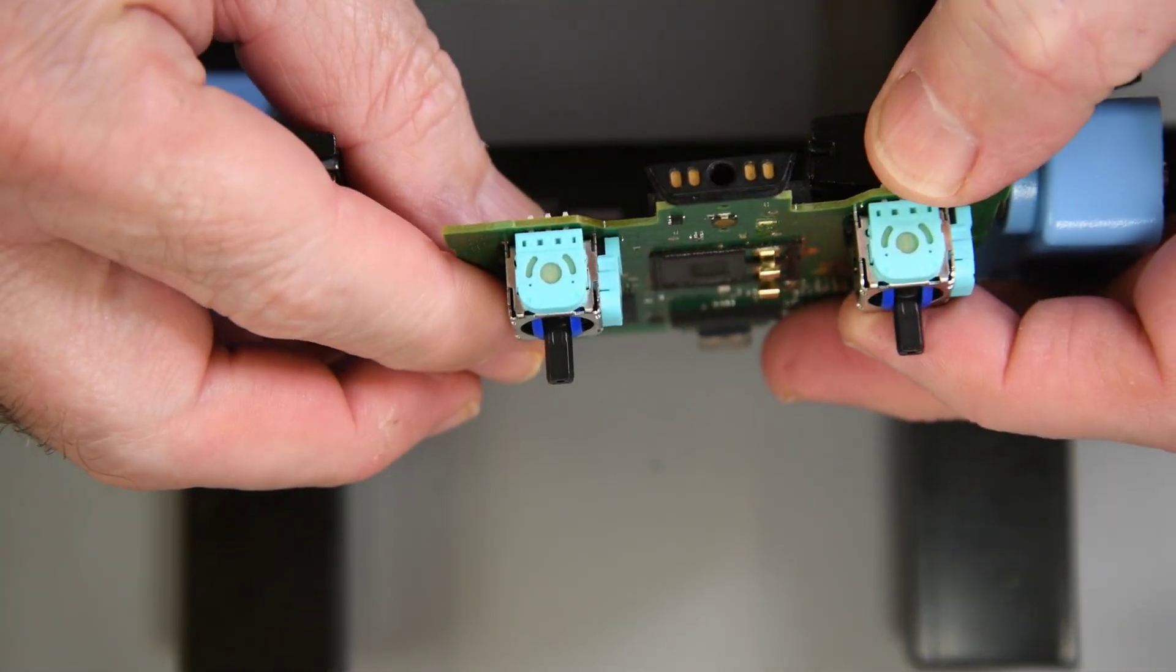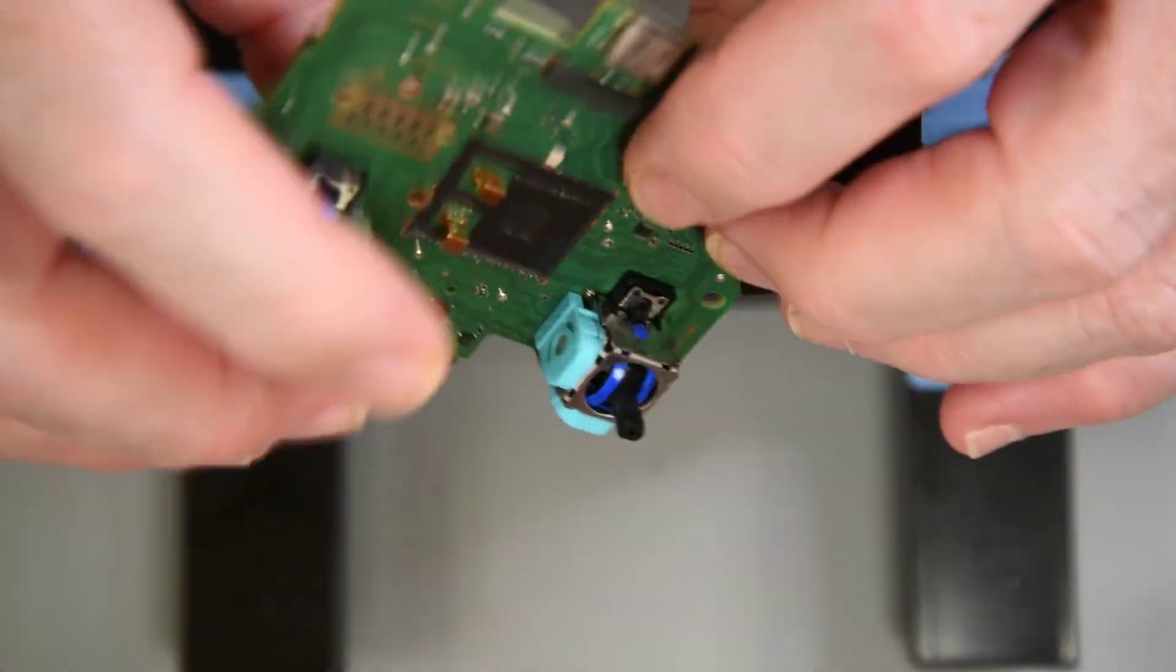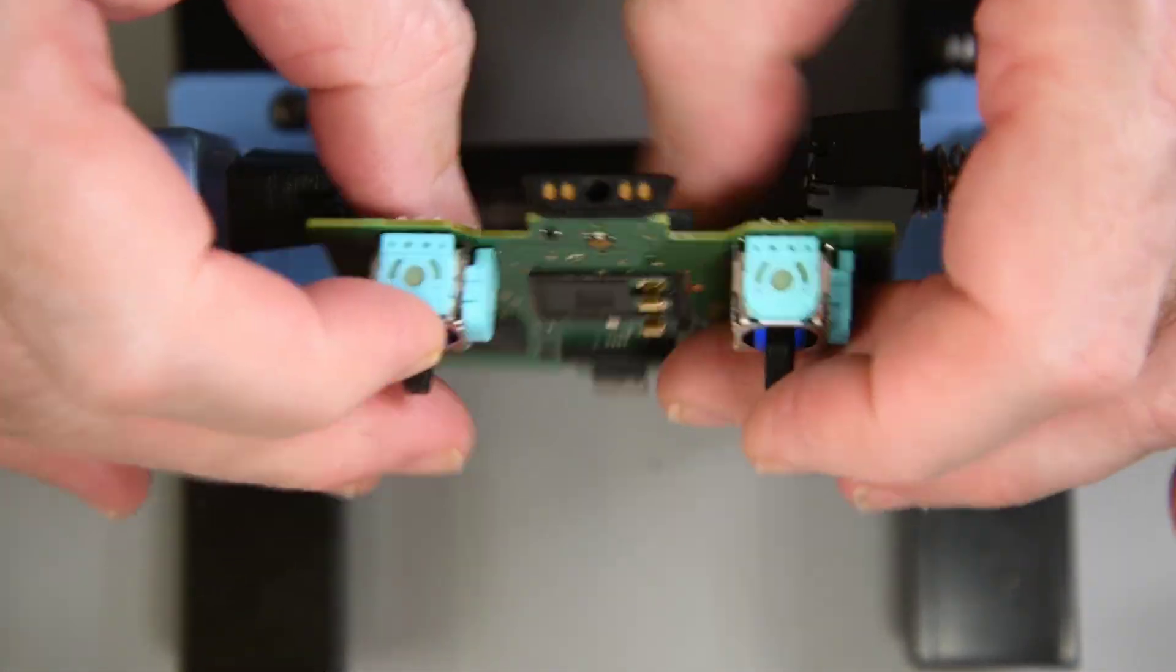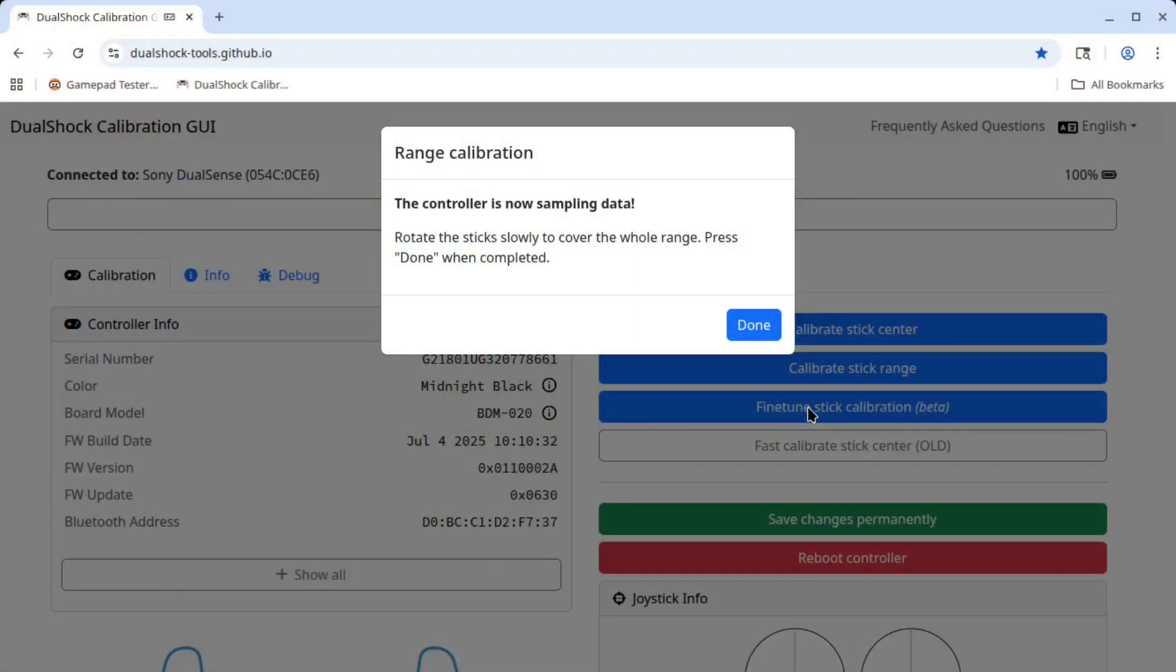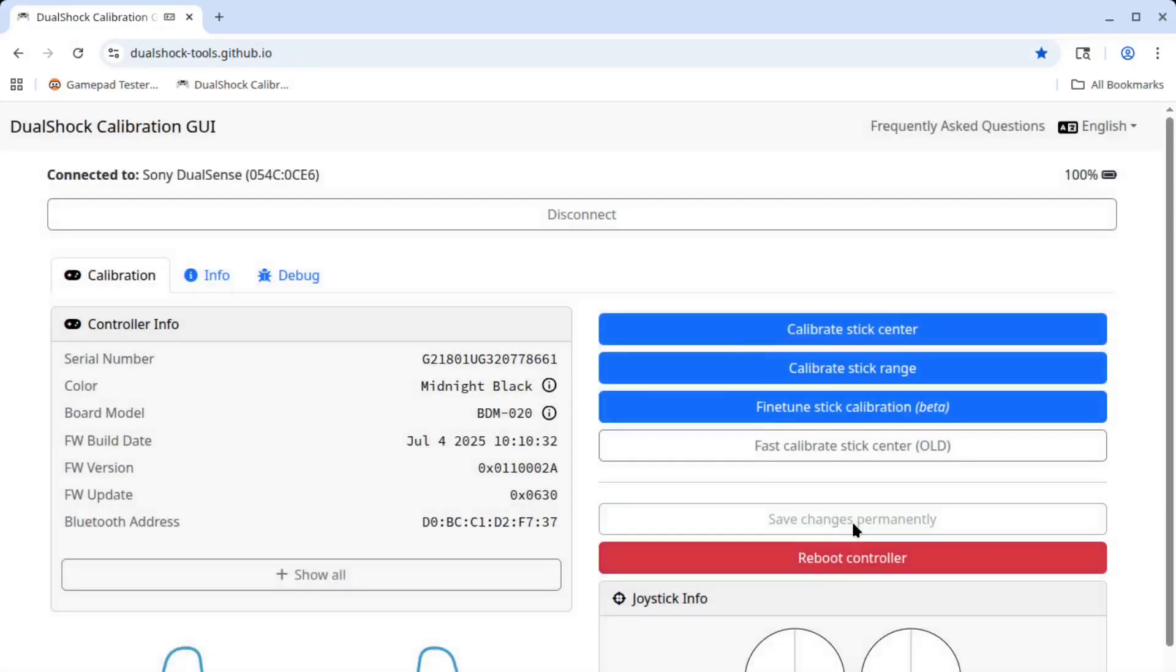These are going in a BDM-020 DualSense mainboard. Mechanically, they fit just fine. I'll make sure it's working correctly and then put it back together. I'll speed through the calibration, stick center, and then stick range, and then save the changes.